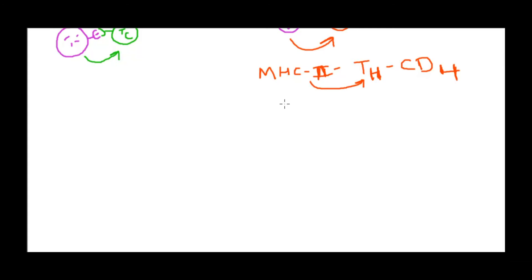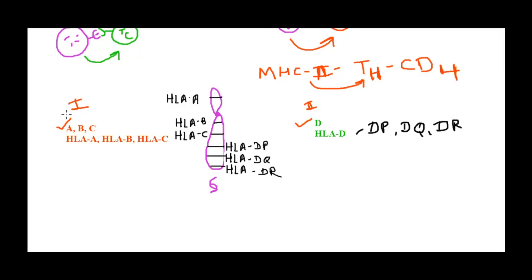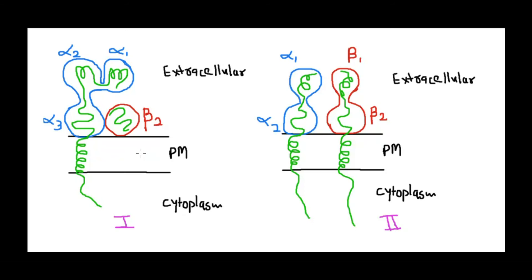MHC molecules are encoded by a set of genes, and the genes coding for MHC class 1 and class 2 differ. Genes that code for MHC class 1 are A, B, and C — they were the first to be discovered. For MHC class 2 it is gene D. All these genes are present on chromosome number 6. For HLA-D there are three regions: DP, DQ, and DR. So class 1 is HLA-A, HLA-B, and HLA-C; class 2 is HLA-DP, HLA-DQ, and HLA-DR.